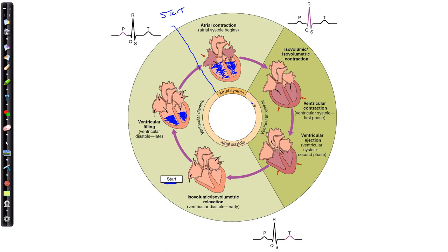The atria then go into their relaxation period. Immediately after atrial systole begins ventricular systole. The ventricles begin to contract, causing the AV valves to close — both the tricuspid and bicuspid valves close at this point. We call this isovolumic contraction: the heart is contracting, the ventricles are contracting, but the volume within the ventricles stays the same because both the AV valves and the semilunar valves are closed.